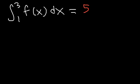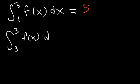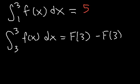Now what about this example? What is the antiderivative of f of x dx from 3 to 3? This is equivalent to f of 3 minus f of 3, which are the same, so they cancel. This is going to be 0. Whenever the two limits are the same, the answer is always 0.